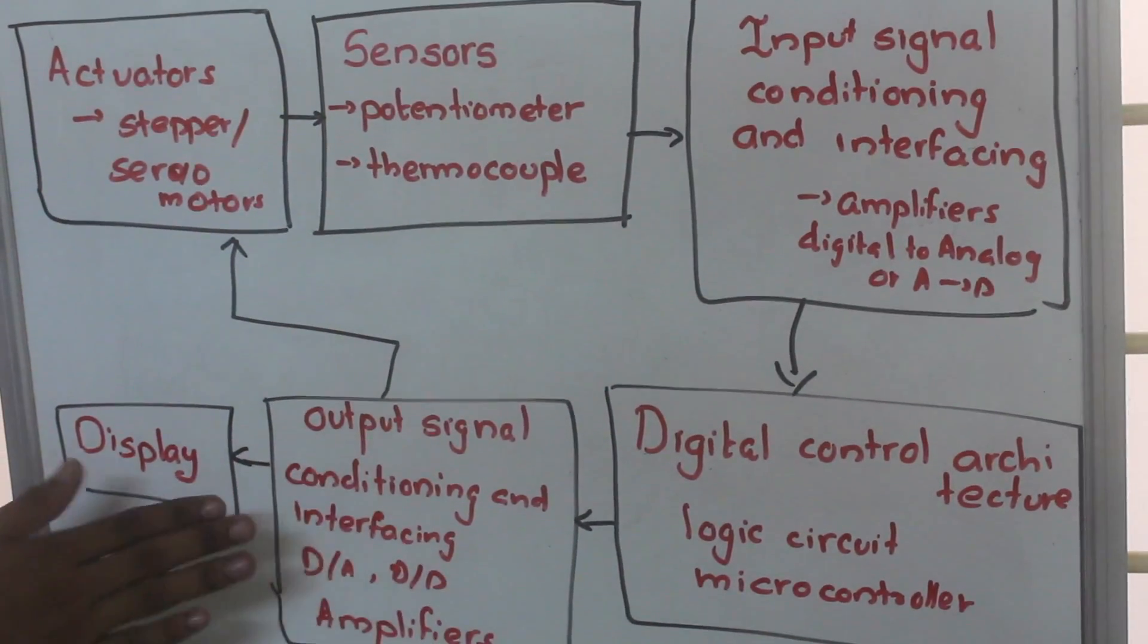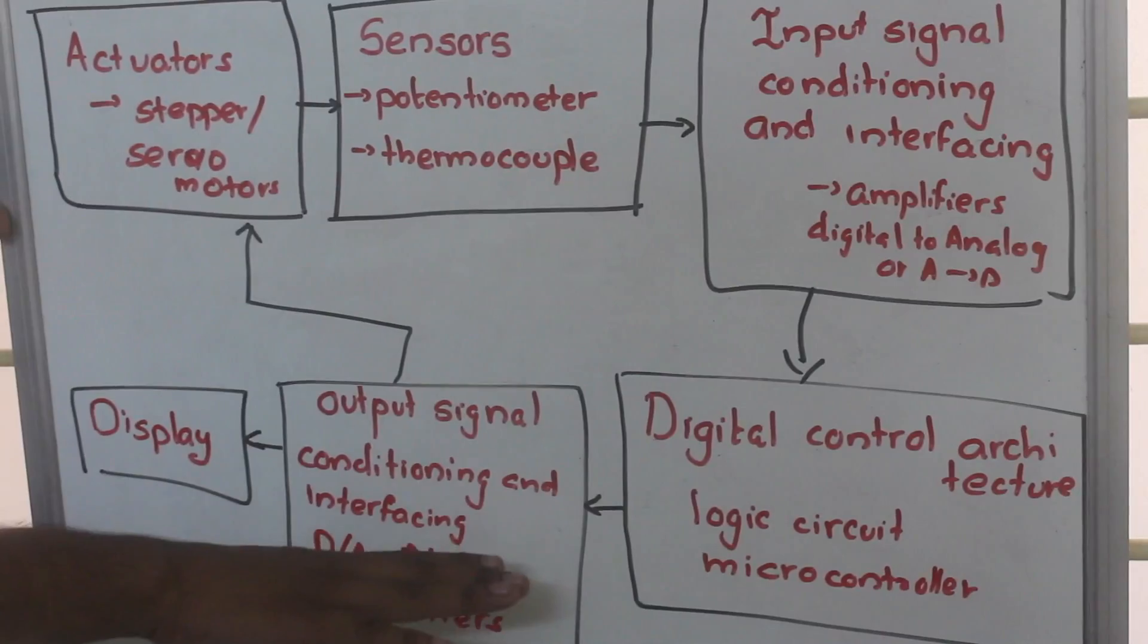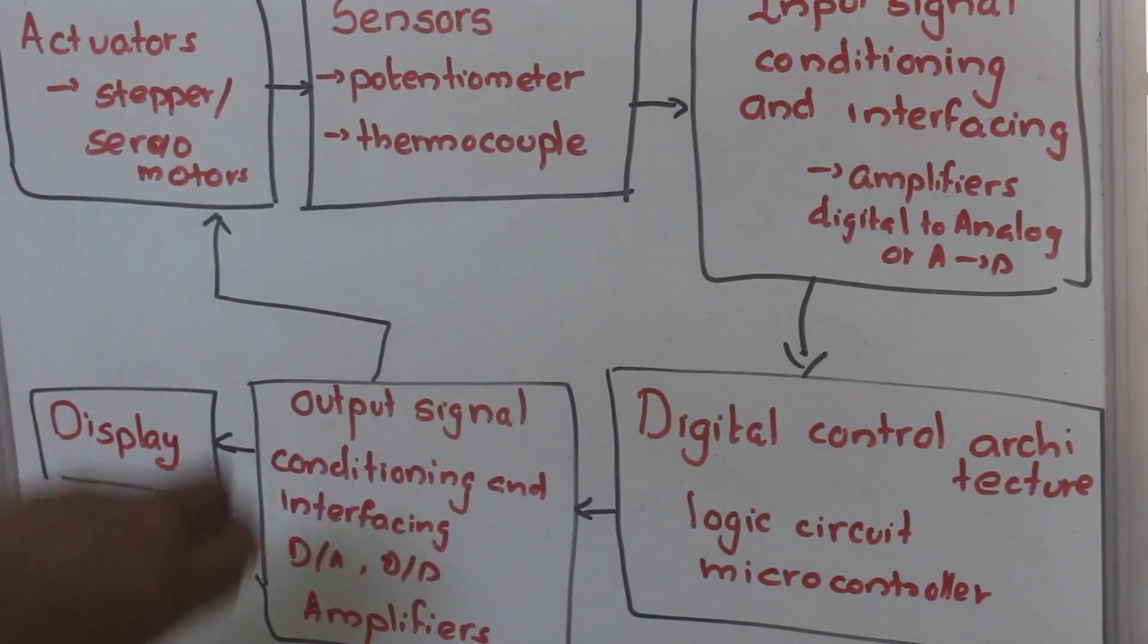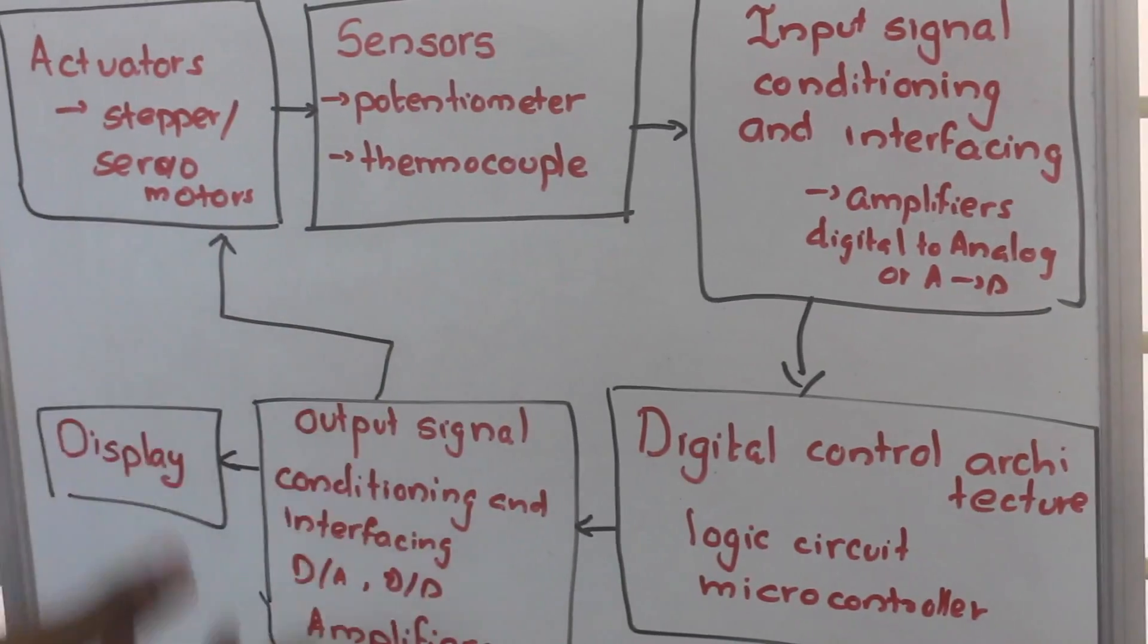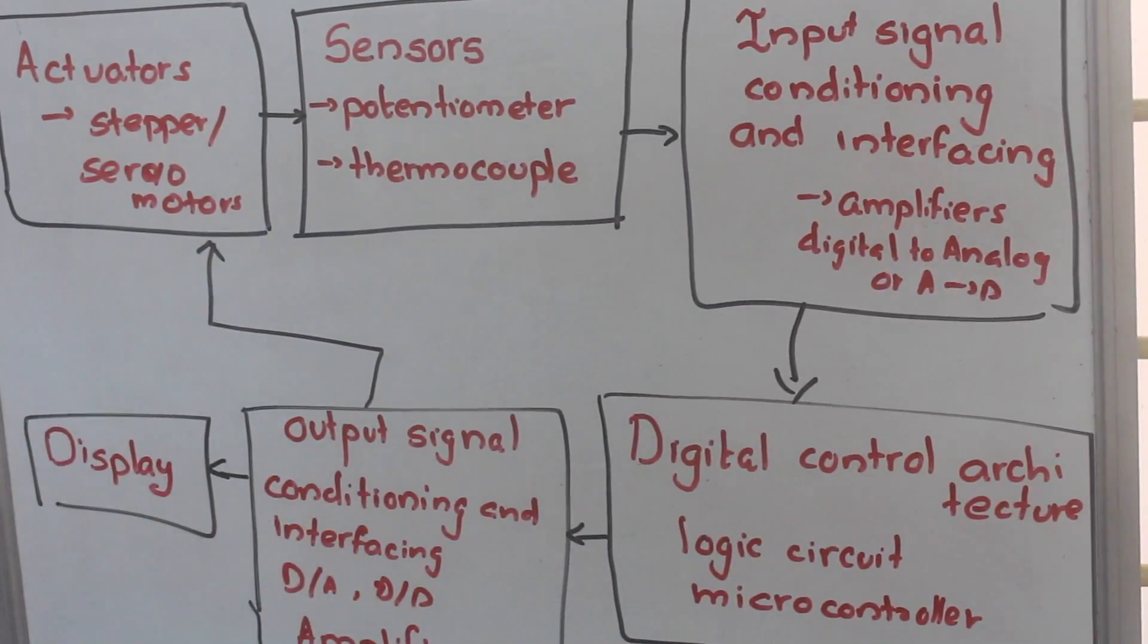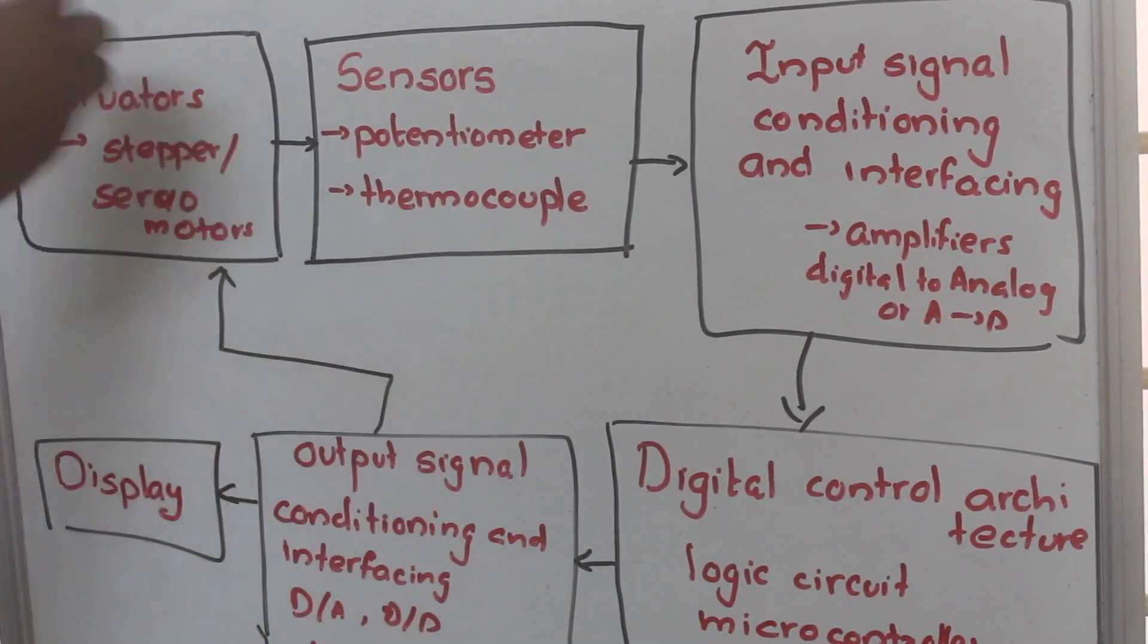Using the output signal and the conditioning, we amplify the output signal and convert it into our required form to digital or analog. A part of it is given to actuators.